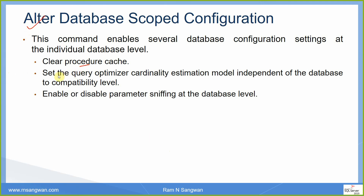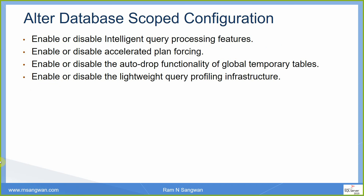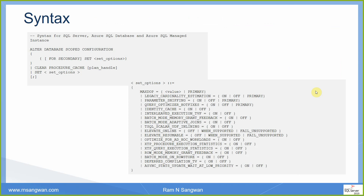With ALTER DATABASE SCOPED CONFIGURATION you can: clear the procedure cache, set the query optimizer cardinality estimation model independent of the database compatibility level, enable or disable parameter sniffing at the database level, enable or disable query optimization hotfixes, enable or disable collection of execution status for natively compiled T-SQL modules, enable or disable Intelligent Query Processing features, enable or disable accelerated plan forcing, and enable or disable auto-tuning functionality.